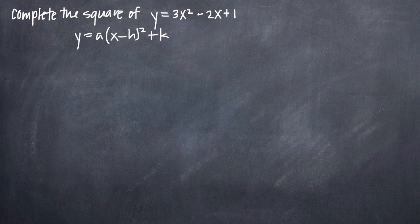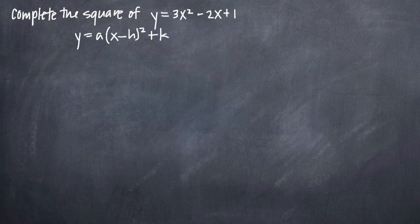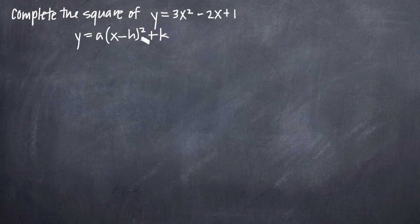In this particular problem, we've been asked to complete the square of y equals 3x squared minus 2x plus 1. The equation we're going to need to complete the square is y equals a times the quantity x minus h squared plus k.